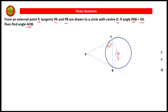OA is a radius and the radius through the point of contact to the tangent is always perpendicular to the tangent. So OA is perpendicular to PA — reason: the radius through the point of contact is perpendicular to the tangent at the point of contact. Therefore angle OAP is equal to 90 degrees.